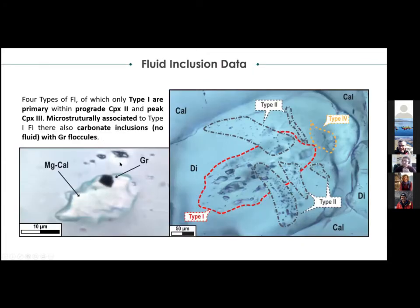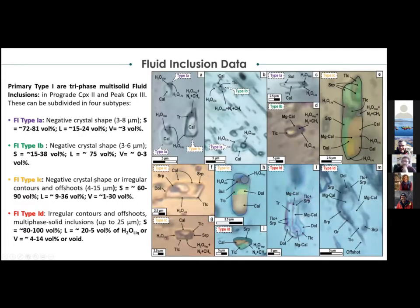In these diopside, there are generally four types of fluid inclusions, but only Type 1 are primary and are microstructurally correlated to carbonate inclusions with some graphite flakes. Type 1 fluid inclusions are three-phase multi-solid fluid inclusions, and based on their habit, the ratio between liquid, vapor, and solid phases, and the variety of solid phases, they can be further subdivided into four subtypes. From Type 1A to 1D, the habit progressively changes from a negative crystal shape to irregular.